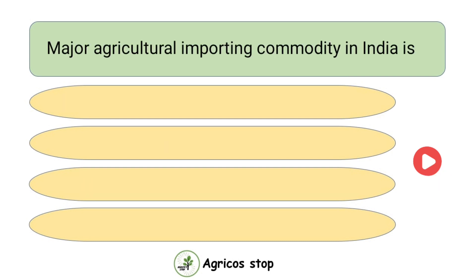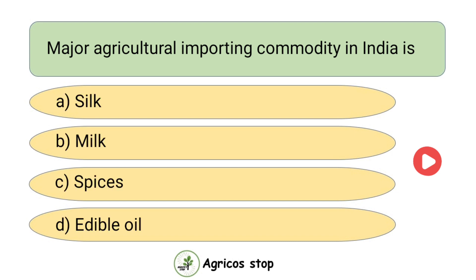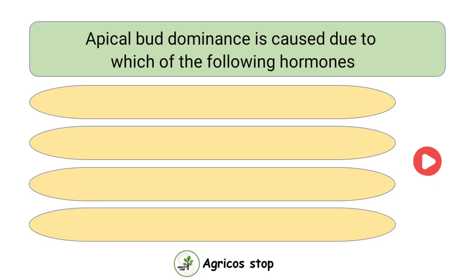Major Agricultural Importing Commodity in India is — options are Silk, Milk, Spices, and Edible Oil. The answer is Edible Oil. Edible Oil is the major agricultural importing commodity, contributing to 65%.